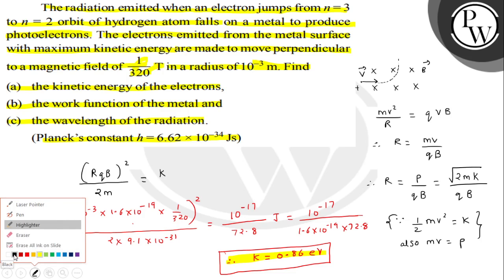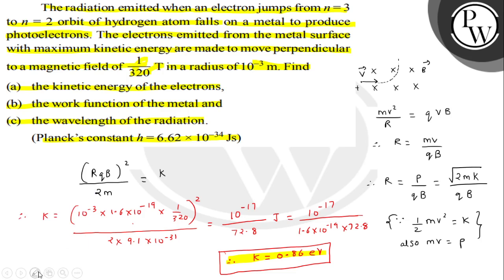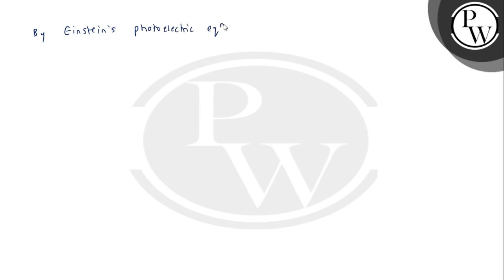Now we proceed to the next part: we have to find the work function of the metal. To calculate the work function, we use Einstein's photoelectric equation: hν = work function (φ) + maximum kinetic energy (K_max). Therefore, φ = hν − K_max. We have already calculated K_max, so we just need to find the value of hν.